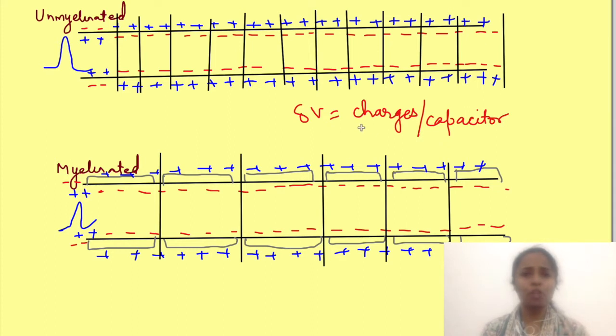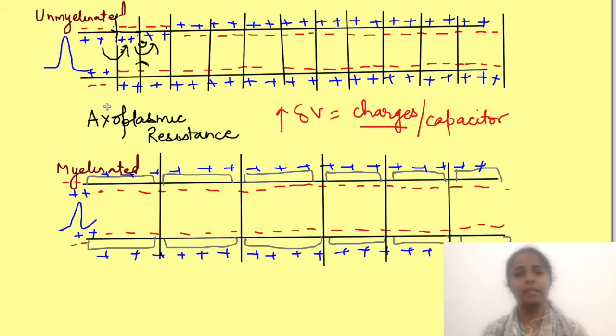So clearly more charge at a site means more voltage change. Now flow of charges from one region to another depends on axoplasmic resistance which is the resistance offered by the cytoplasm to the flow of charges. See as charges move along the length of the axon they actually collide with each other. This leads to resistance and hence loss of potential.